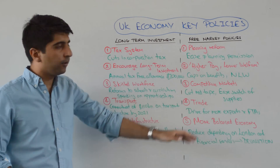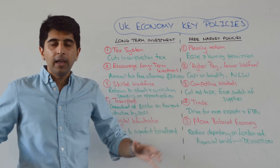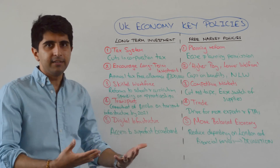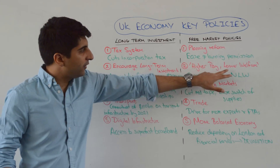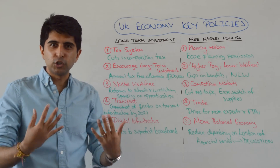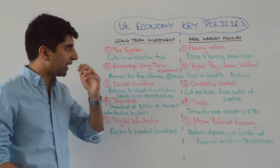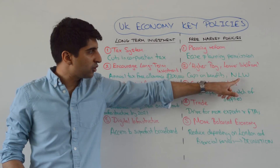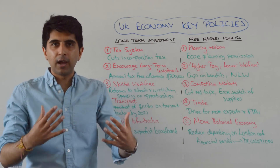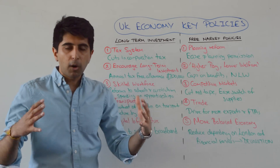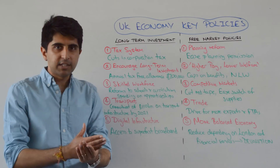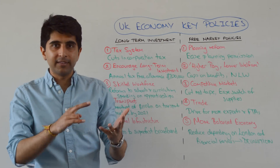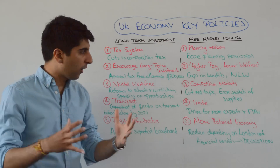For free market policies, the UK government is committed to easing planning permission — especially for building new houses — which can significantly reduce costs and make it much easier to do business and expand. The government is promoting a higher pay and lower welfare society: capping benefits and increasing the minimum wage towards a national living wage of between £9 and £10 an hour by 2020. To improve competition in markets, the UK government is cutting red tape and making it easier for consumers to switch suppliers for things like internet, water, gas, and electricity supplies.